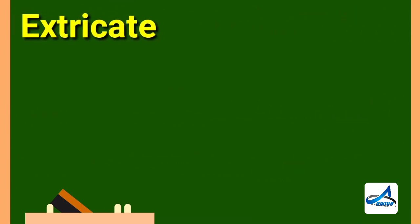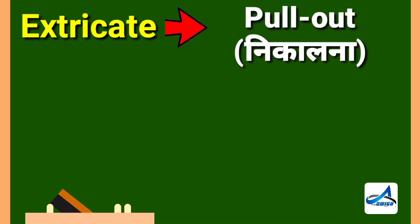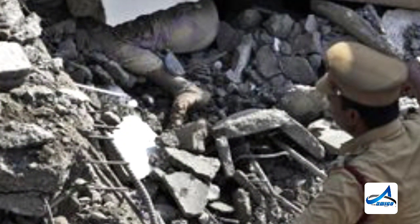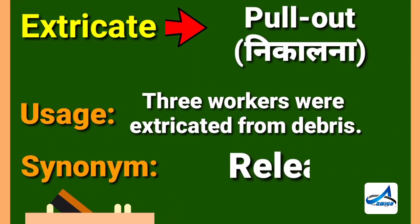The next word that I have for you is extricate. Friends, extricate means pull out. In Hindi, you can say nikaalna. Now look at its example. Three workers were extricated from debris. Friends, debris means malba. Teen mazdoon ko malba se nikaala gaya. Its synonym is release.